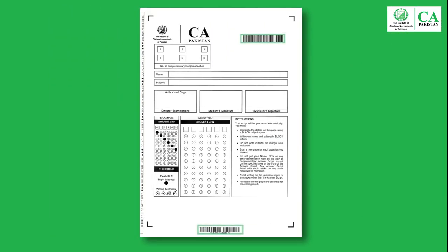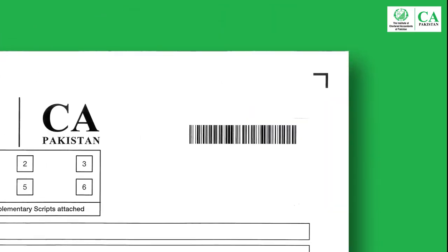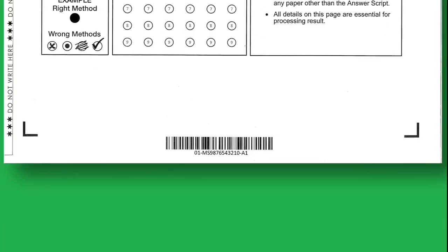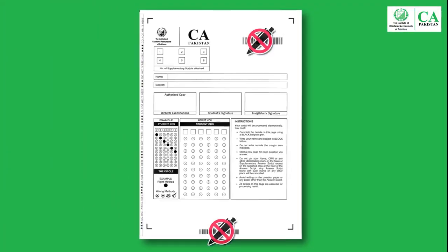You will see two barcodes on the front page. The first barcode is at the top while the second is at the bottom of the page. You must not write on the barcodes. Any damage to the barcodes would hinder the electronic processing of your answer script.